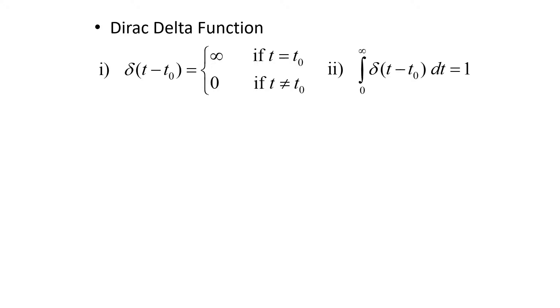And just like all unit functions, the integral from 0 to infinity of delta of t minus t naught is going to be equal to 1.